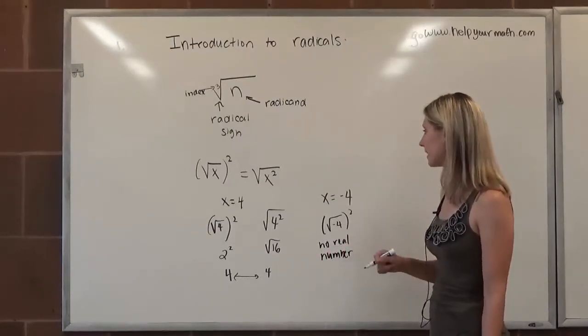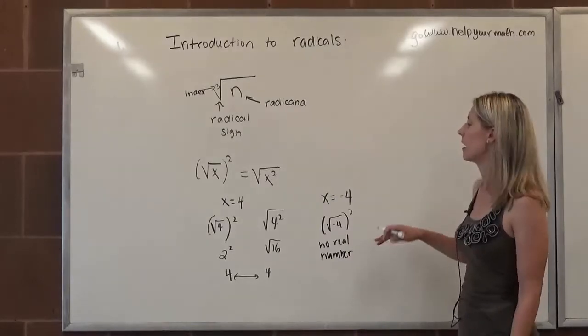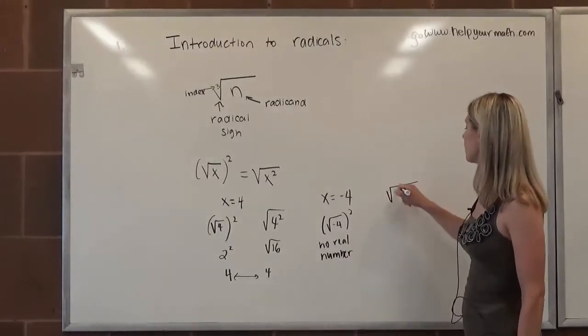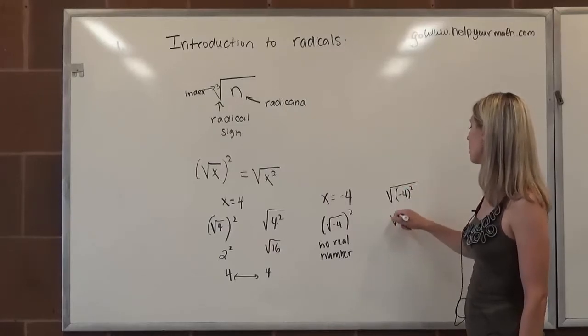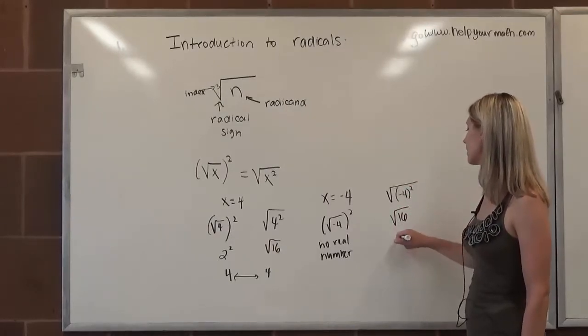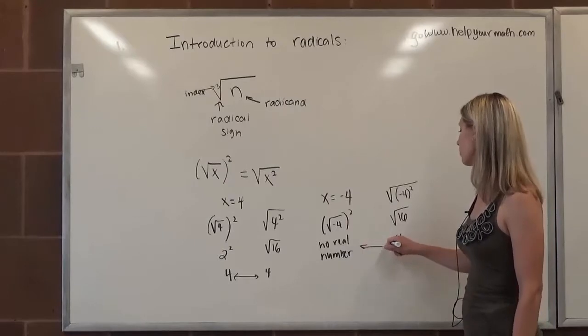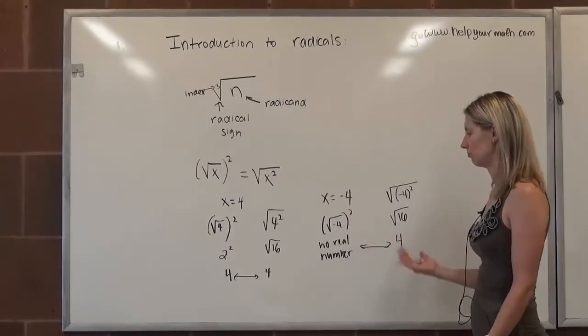If we look at the right-hand side, let's see if that also is not a real number. The square root of negative 4 squared, negative 4 squared is positive 16, and the square root of 16 is 4. Well, 4 is a real number, so it does not equal not a real number.